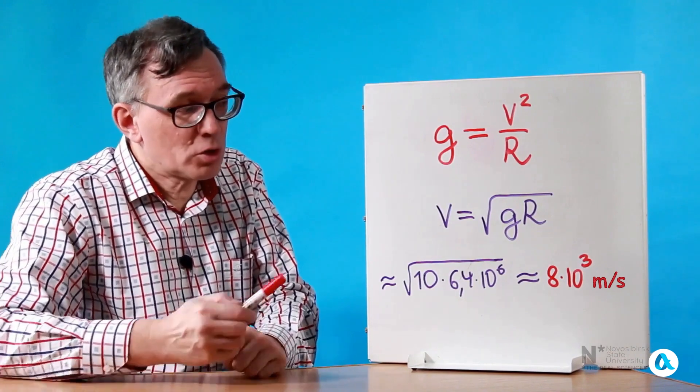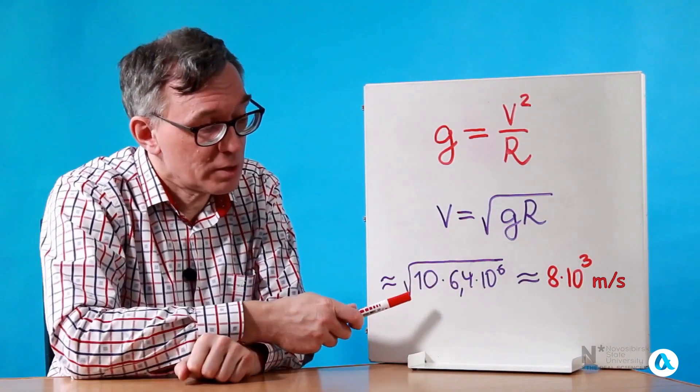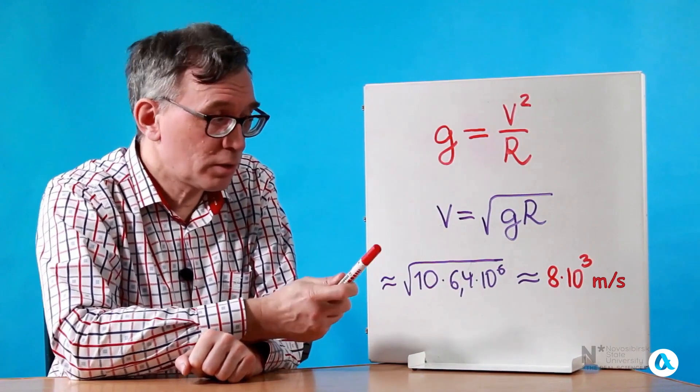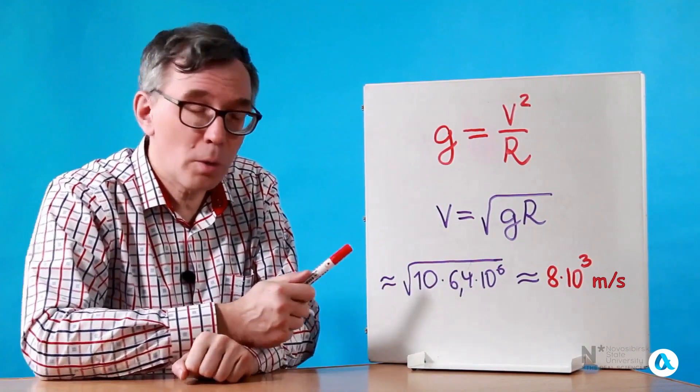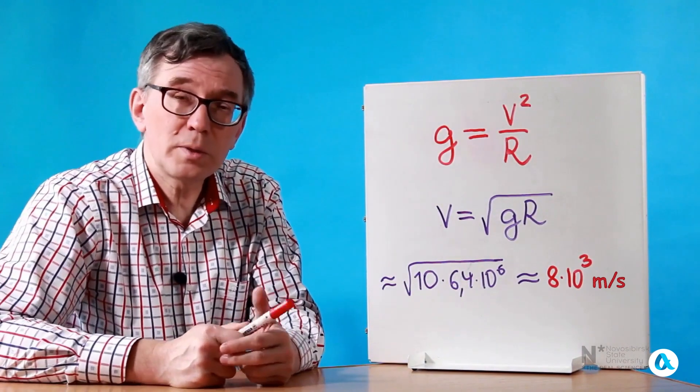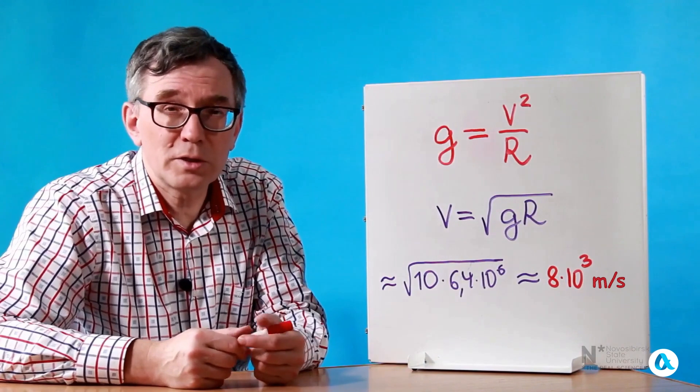Now let's substitute the value of G with the rounded figure of 10 meters per second squared. The radius of the Earth is 6400 kilometers. And we will find that the first cosmic velocity is 8000 meters per second or 8 kilometers per second.